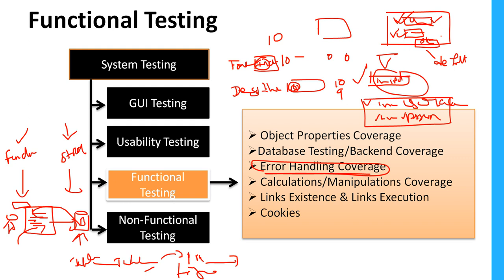Links existence and link execution testing is especially important for web-based applications. We need to verify that all links are properly placed and that every link navigates to the correct target page. If clicking a link navigates to a wrong page, that is a defect. So we verify both that links exist and that they execute correctly.